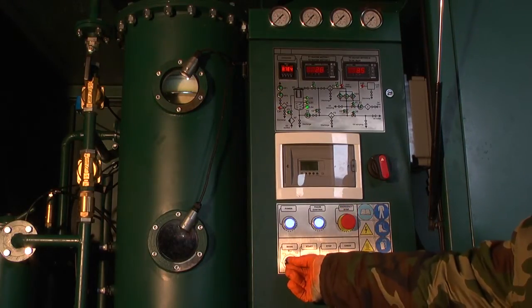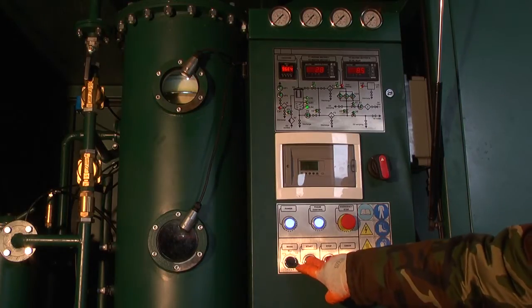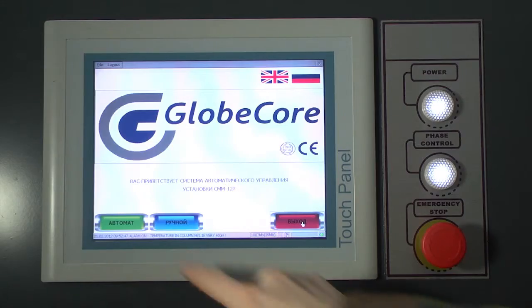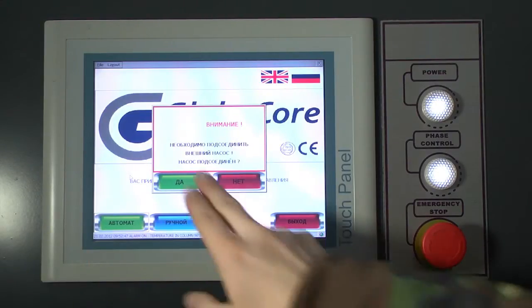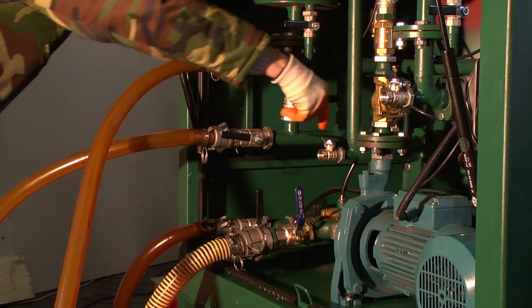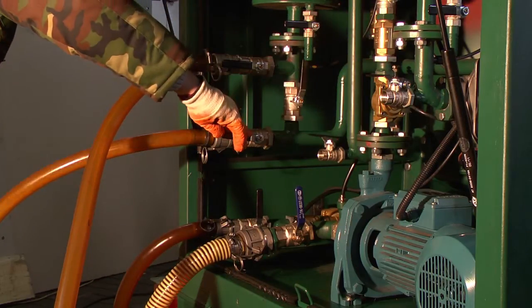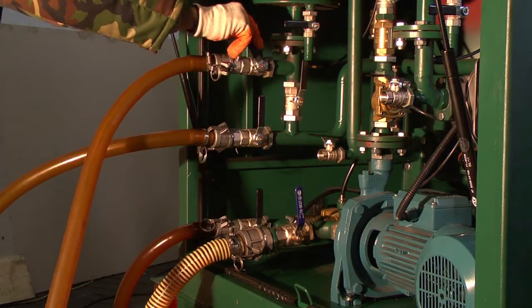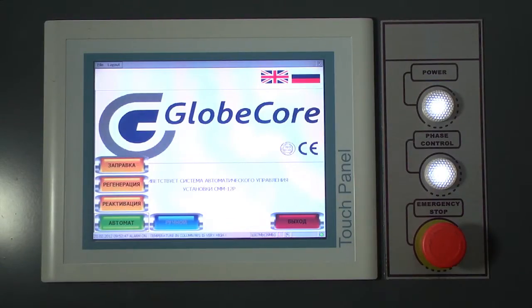After start, the units operate automatically with all process parameters adjusted by automation system. When the sorbent reactivation is required, the bypass line is closed. After the bypass line is closed, the operator initiates sorbent reactivation process.